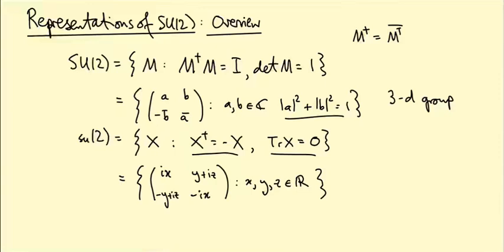There's an easier way to write these Lie algebra matrices. They are all of the form (ix, y+iz; -y+iz, -ix), where x, y, and z are real numbers — three real parameters. So again, it's a three-dimensional Lie algebra.